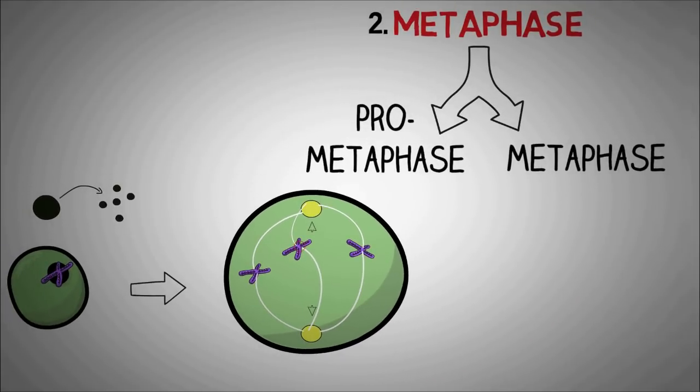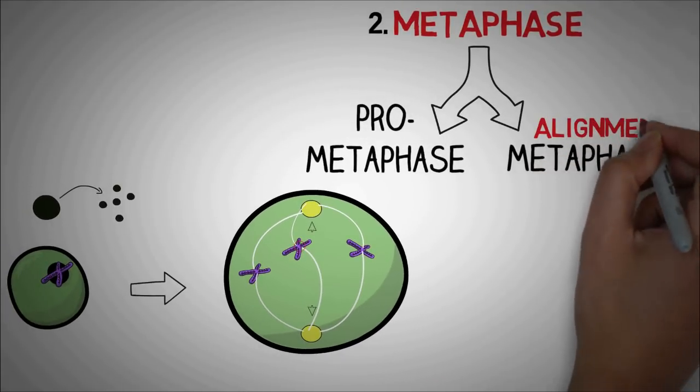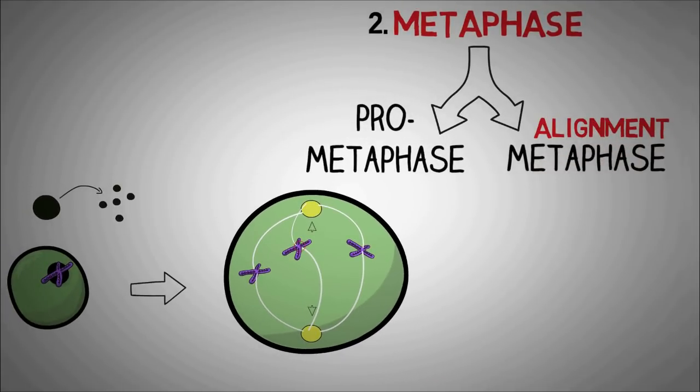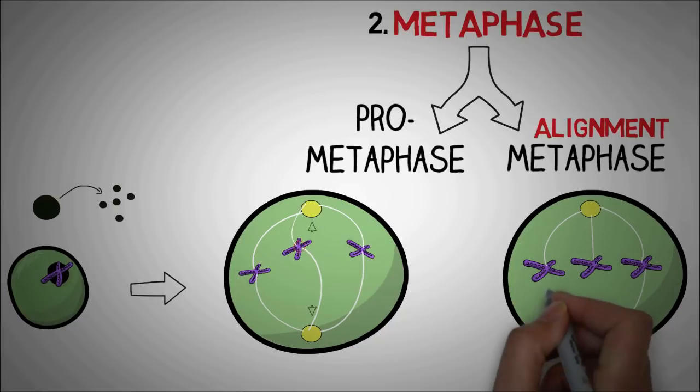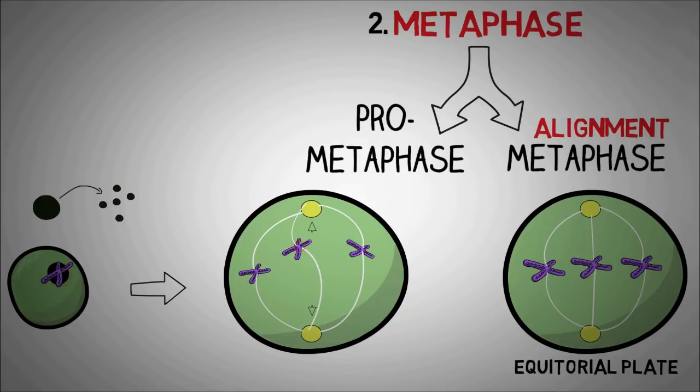Each of these microtubules comes from the centrosome on the opposite end. After the pro-metaphase, we have an actual metaphase, which we described with the word alignment. The centrosomes now start to pull the chromosomes toward the opposite ends of the cell. The resulting tension causes the chromosomes to align along the metaphase plate or the equatorial plate. So this was arrangement, alignment or metaphase.